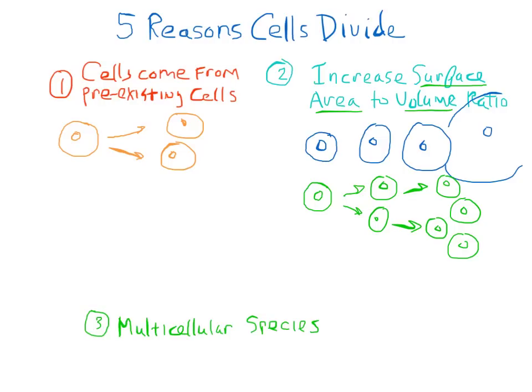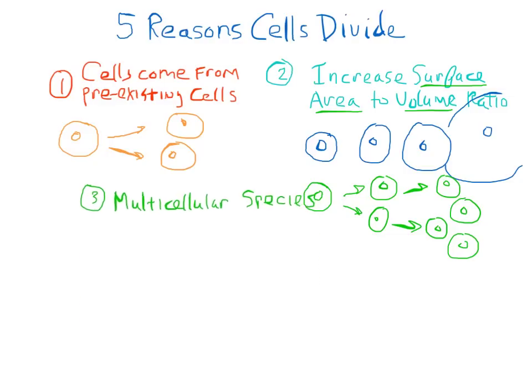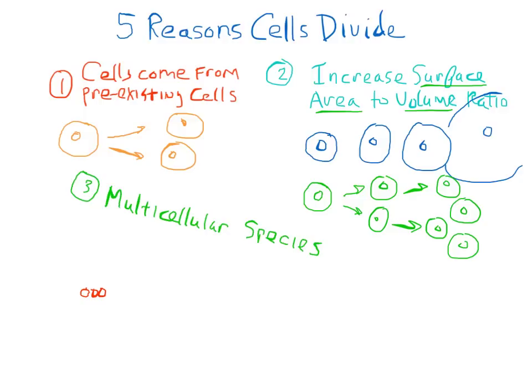Another reason cells divide is so that we can have multicellular species. For example, we could have a species made of many hundreds and millions and trillions of cells hooked together. This would not be possible if cells did not have the ability to divide.